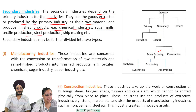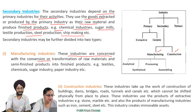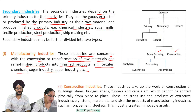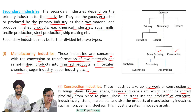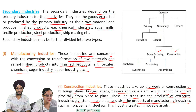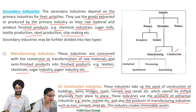Secondary industries may be further divided into two types: 1. Manufacturing industries — concerned with the conversion of raw materials and semi-finished products into finished products, for example textiles, chemicals, sugar industry, paper industry. 2. Construction industries — these take up the work of construction of buildings, dams, bridges, roads, tunnels, and canals, which cannot be shifted physically from place to place. These industries use the products of extractive industries such as stone and marble, and also the products of manufacturing industries such as iron, cement, and steel. This industry creates immovable assets.